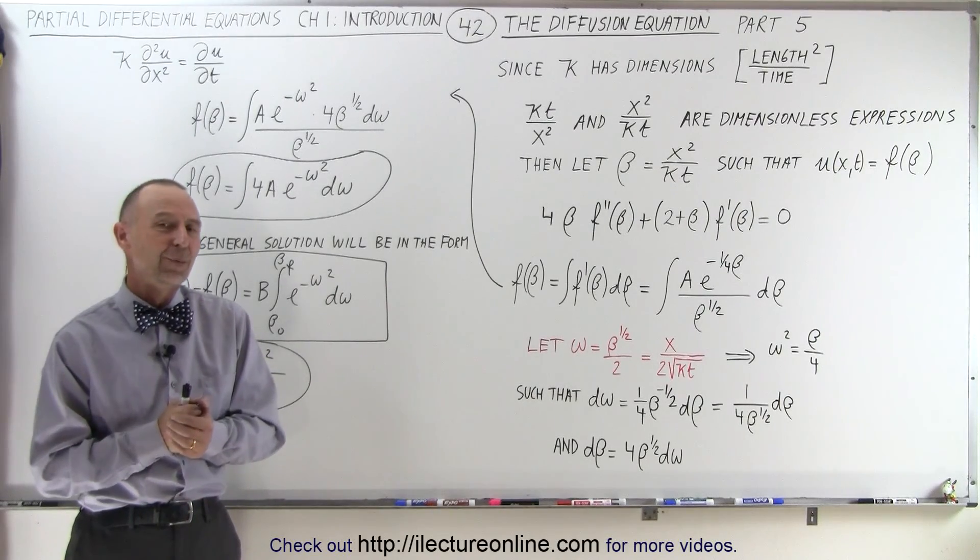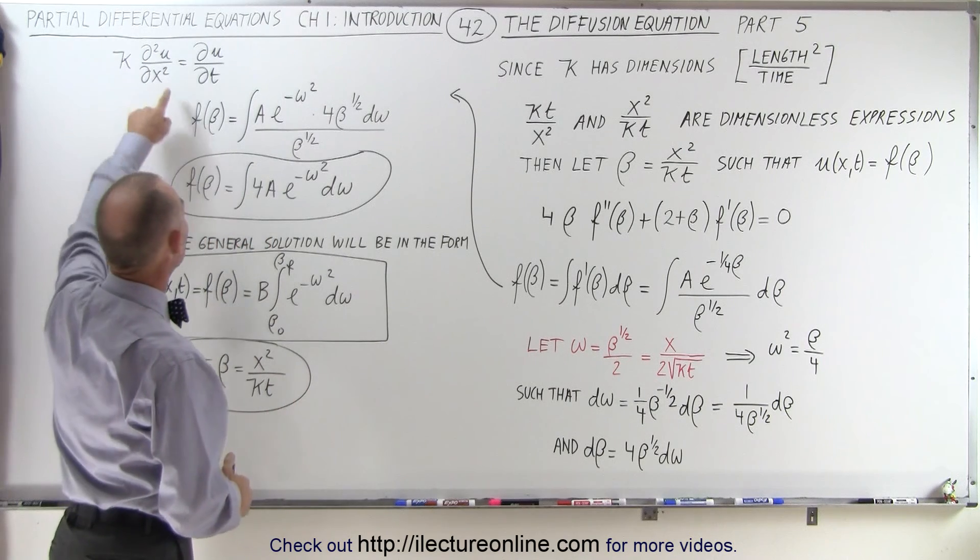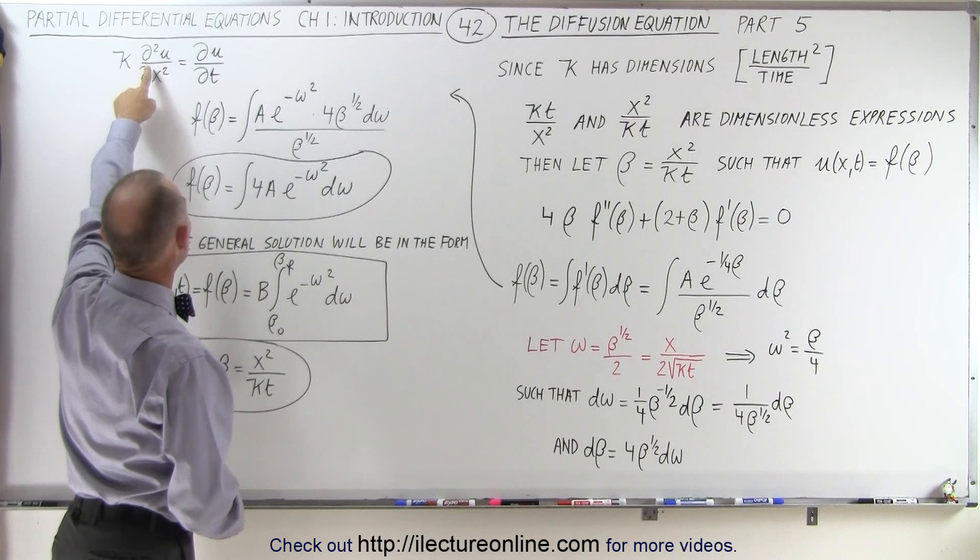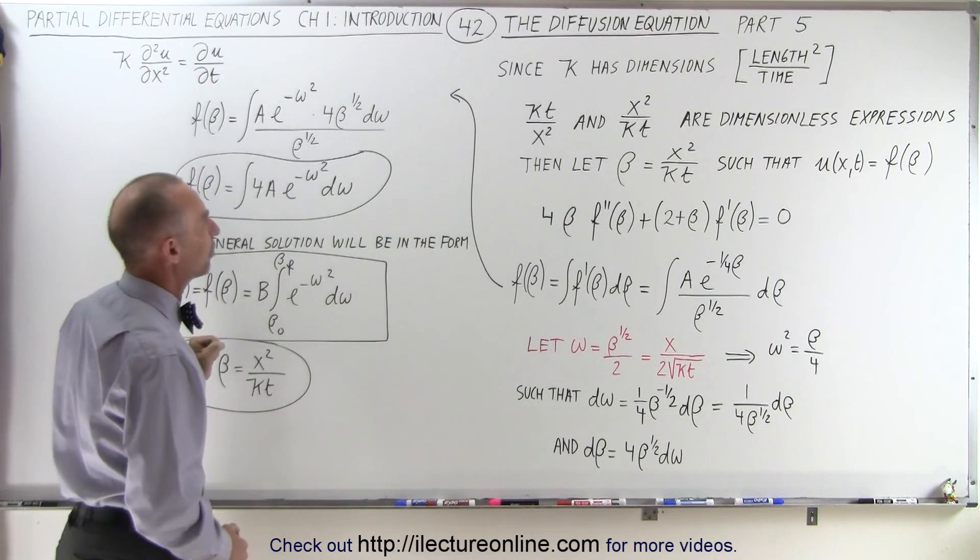Welcome to iLectureOnline. We're now finally able to come up with the final general solution for the diffusion equation, where we have some constant times the second partial derivative of u with respect to x, equaling the first partial derivative of u with respect to t.